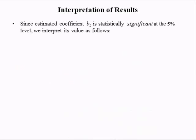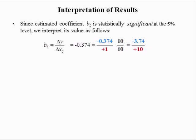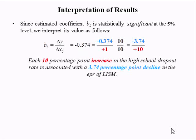Since estimated coefficient B5 is statistically significant at the 5% level, we interpret its value as follows. B5 is the change in the employment population ratio over the change in variable X5, and B5 was found to be negative 0.374. Writing it as negative 0.374 divided by 1, then multiplying by 10 over 10, gives negative 3.74 over 10. So each 10 percentage point increase in the high school dropout rate is associated with a 3.74 percentage point decline in the employment population ratio of low-income single mothers.